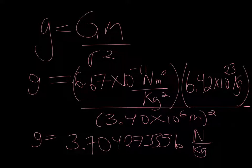Times the smaller mass of Mars, which is 6.24 times 10^23 kilograms, divided by the radius squared, which is also smaller in diameter: 3.4 times 10^6 meters squared.